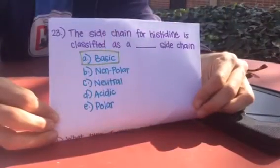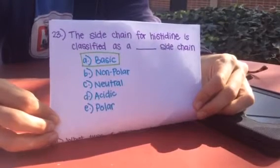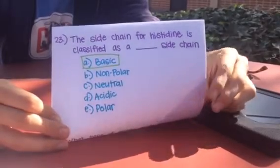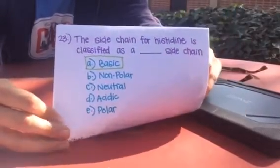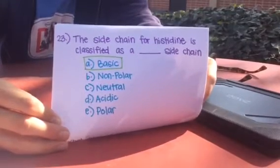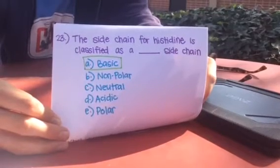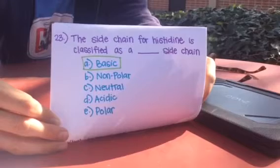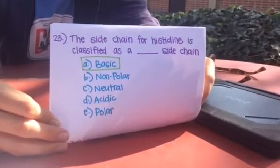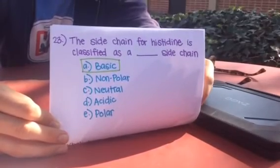It is not nonpolar because nonpolar amino acids have an R group that is hydrogen, alkyl, or aromatic. It is not neutral because histidine has a charge. It is not acidic because there is not a carboxylic acid as the R group. It is polar, but a polar amino acid can be basic, acidic, or neutral. Therefore it is A — basic — because its R group is an amine.